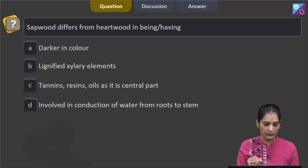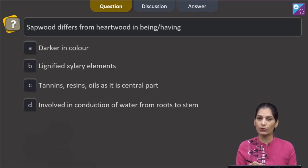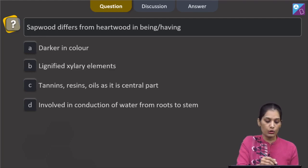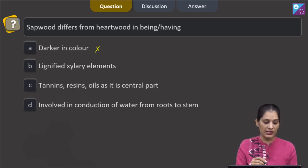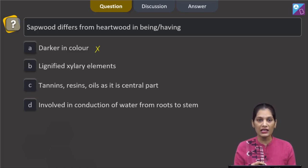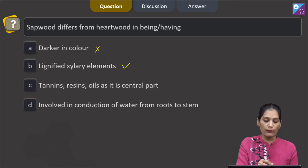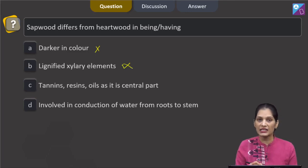Let's move to the next question. This question says sapwood differs from heartwood in being or having darker in colour. No, sapwood is not darker in colour, it is lighter in colour as compared to the heartwood. B, lignified xylary elements. In case of sapwood as well as heartwood, both contain lignified xylary elements as xylary elements are lignified. So this is true for both of them, so this cannot be the difference.